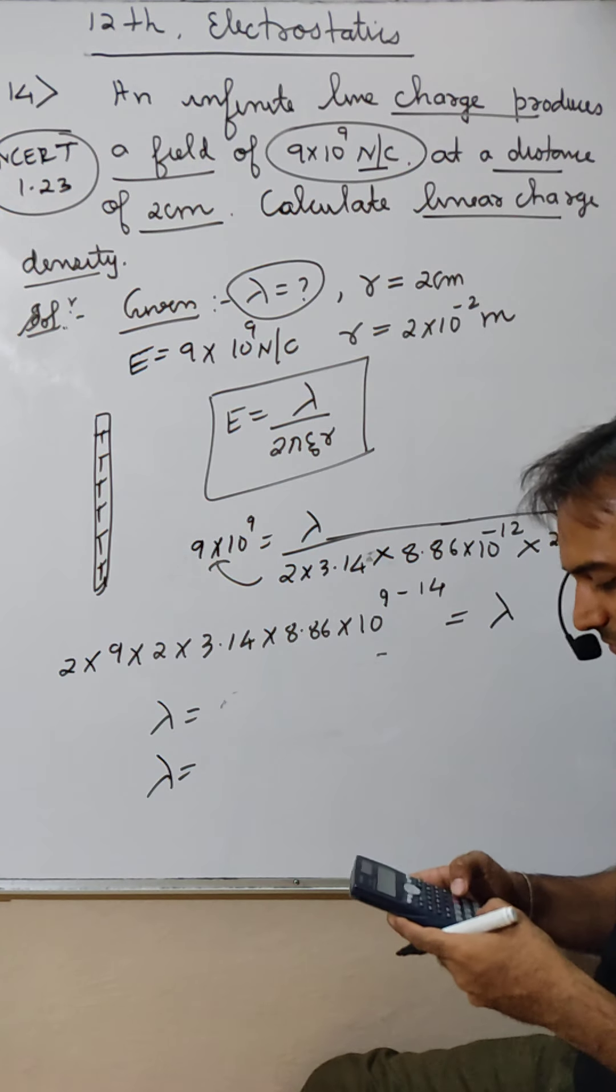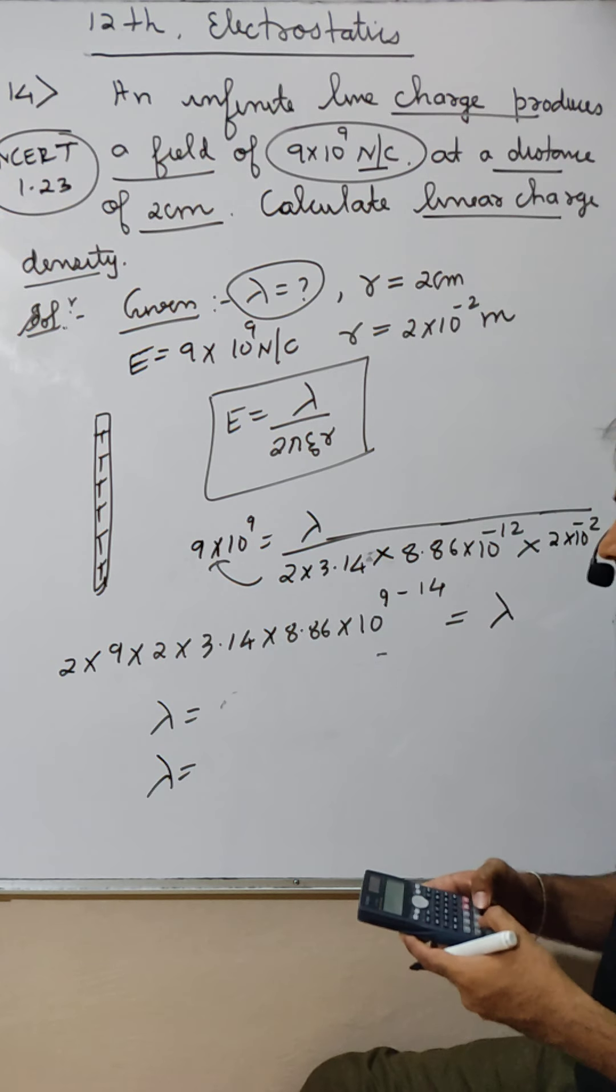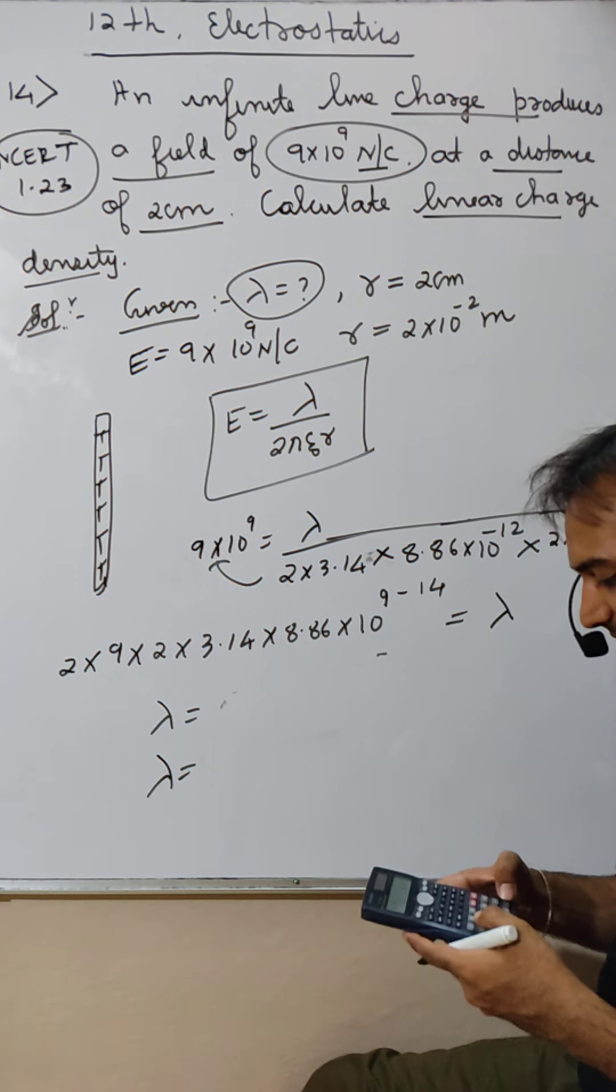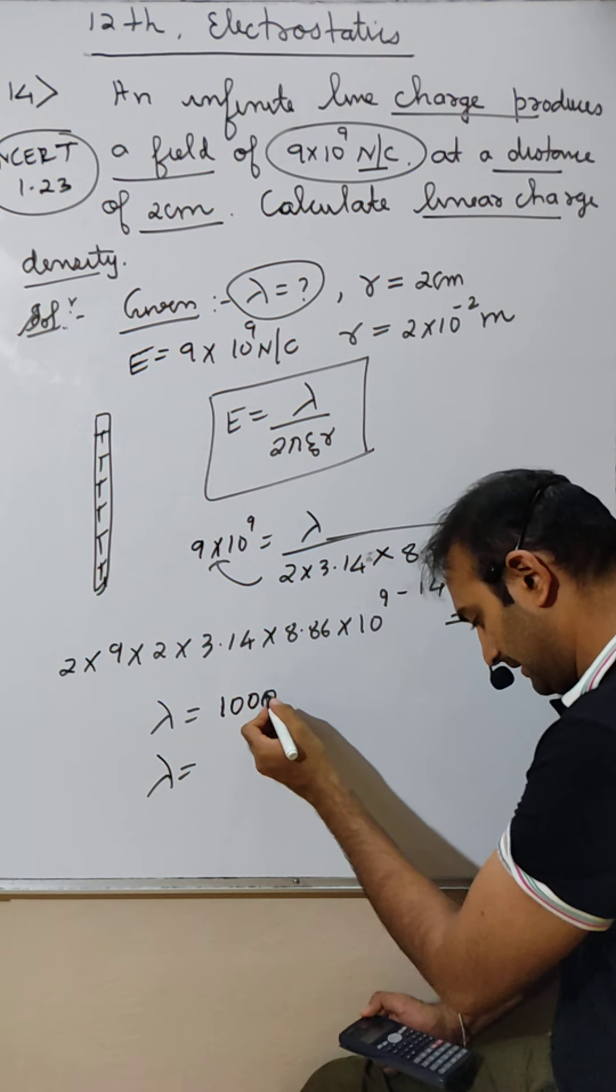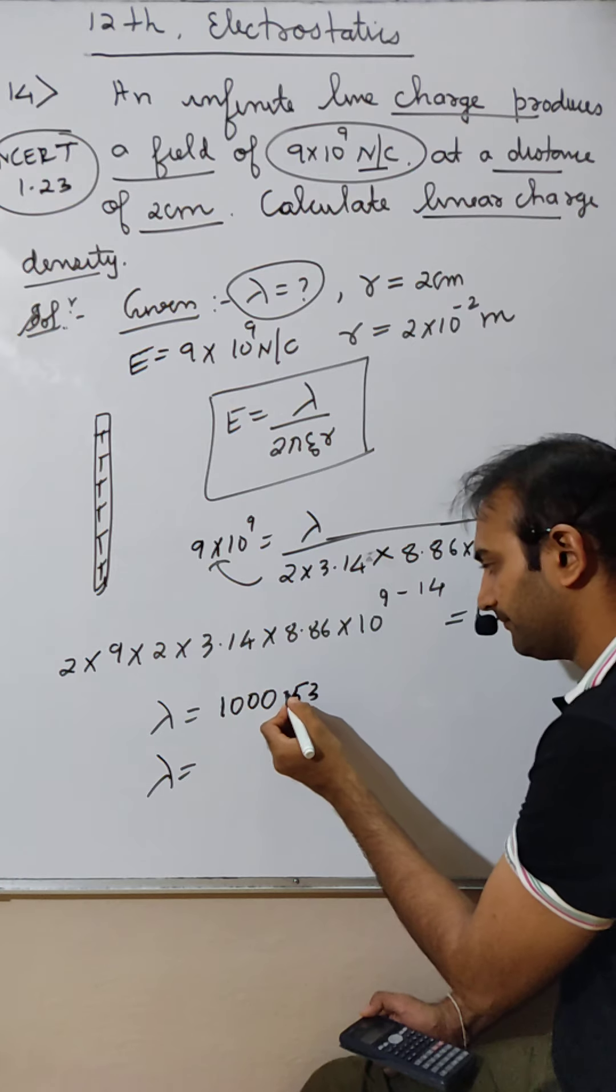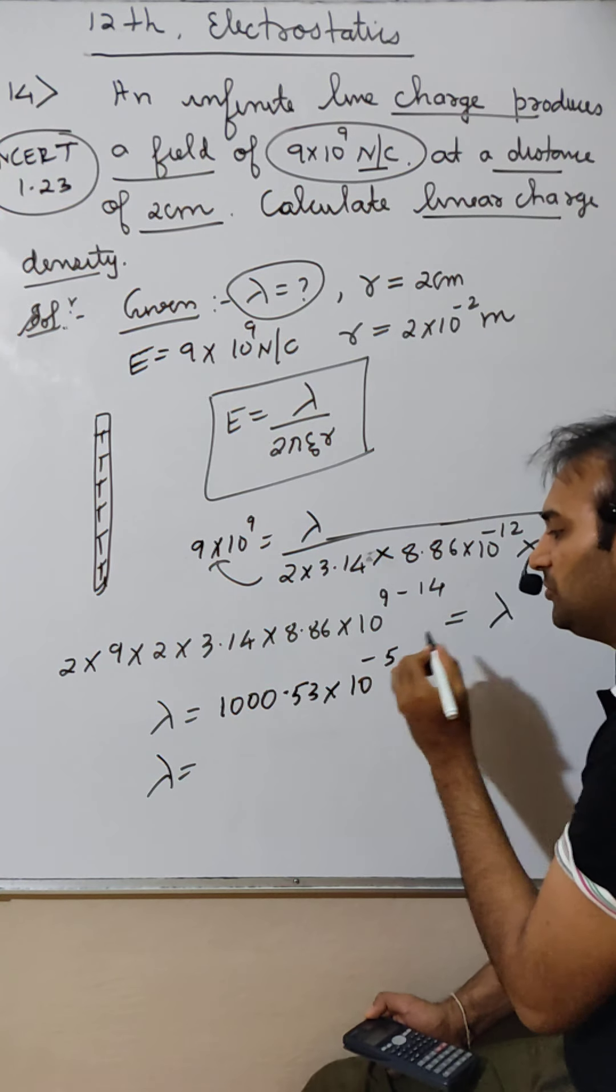2 into 9 into 2 into 3.14 into 8.86. 1,000.53 into 10 raised to minus 2.